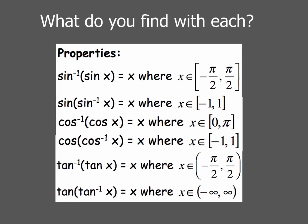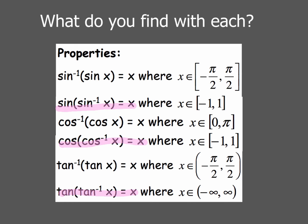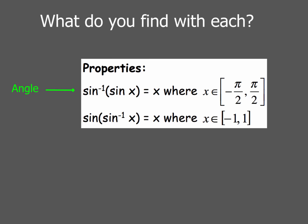Pay attention to the outside part and the inside part whenever you're dealing with composite functions. In general, the outside function always tells us what type of answer we're looking for. Whether the outside function is arcsine, arccosine, or arctangent, we're always trying to find an angle. On the other hand, if the outside function is a regular trig ratio — sine, cosine, or tangent — then we're trying to find a trig ratio.